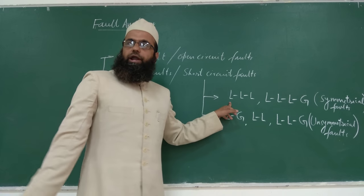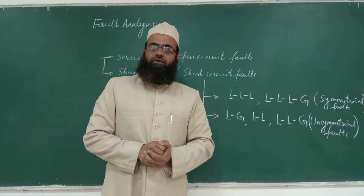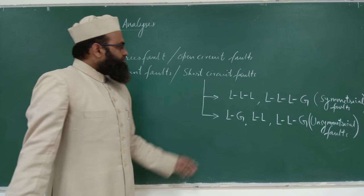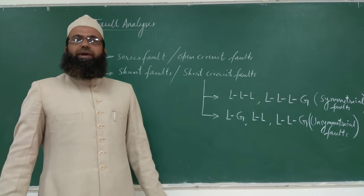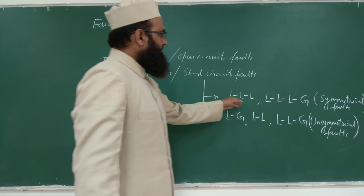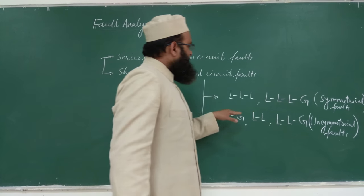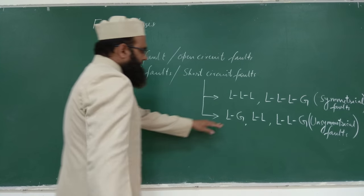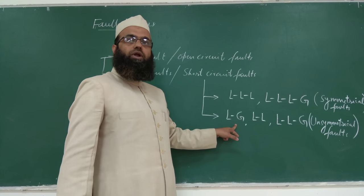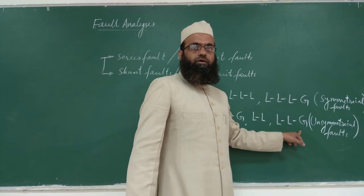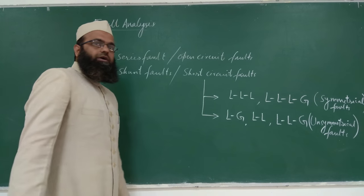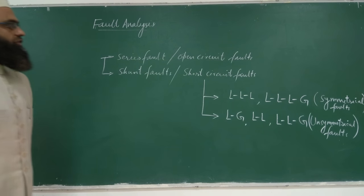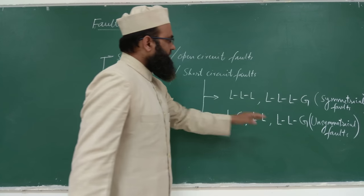In symmetrical faults, although the fault currents will be abnormally high, they will be balanced — meaning the magnitude of currents in all three lines will be equal, with a phase displacement of 120 degrees electrical. That is why fault currents in triple L and triple LG faults are balanced. In unsymmetrical faults such as LG, LL, or double LG faults, the currents in the three lines will not be symmetrical.